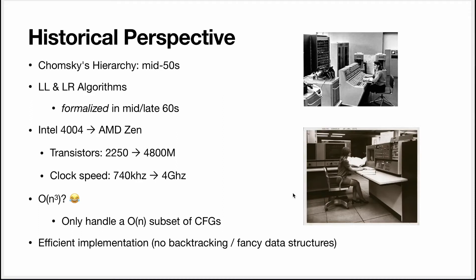To understand why we are seeing these imperfect algorithms, it's important to have some historical perspective. Chomsky proposed a hierarchy of languages and grammars in the mid-50s. The algorithms we're going to see, LL and LR, were formalized in the mid or late 60s. I put 'formalized' in italics because probably people at the time were writing parsers by hand that were doing fairly similar things.